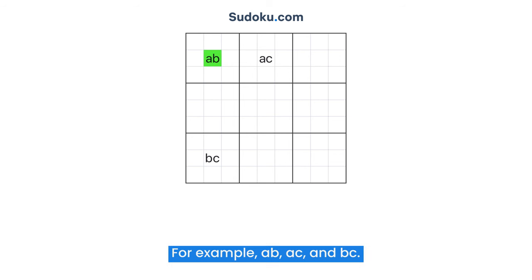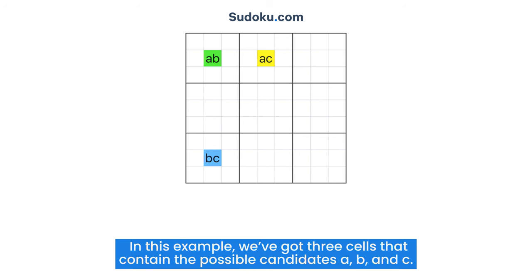For example, A-B, A-C, and B-C. In this example, we've got three cells that contain the possible candidates A, B, and C.